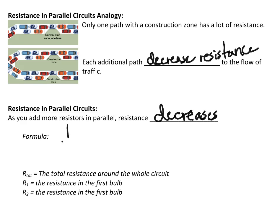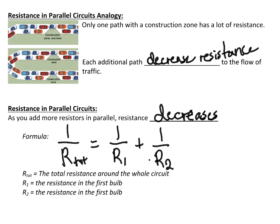The formula for parallel resistance is: 1 over R_total equals 1 over R1 plus 1 over R2. If there are more resistors, you just keep adding terms in the same way. So for three resistors in parallel, you'd add a third term, and that gives you R_total.